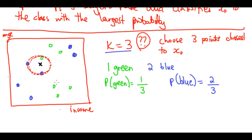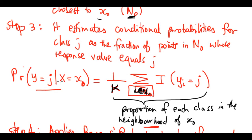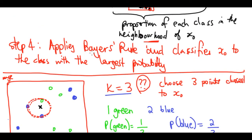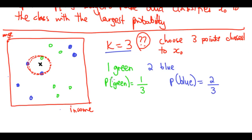That equation from step three is exactly what we just calculated for our black cross. Step four applies Bayes' rule: the largest probability is blue at two-thirds, so we classify x-naught as blue. We give this person orange juice - based on the three neighbors closest in income and age, they probably want orange juice. That's the basics of KNN.